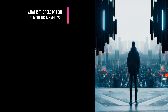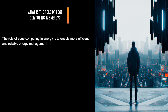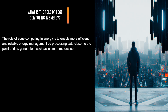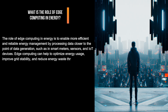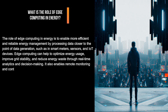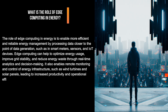What is the role of edge computing in energy? The role of edge computing in energy is to enable more efficient and reliable energy management by processing data closer to the point of data generation, such as in smart meters, sensors, and IoT devices. Edge computing can help optimize energy usage, improve grid stability, and reduce energy waste through real-time analytics and decision-making. It also enables remote monitoring and control of energy infrastructure, such as wind turbines and solar panels, leading to increased productivity and operational efficiency.